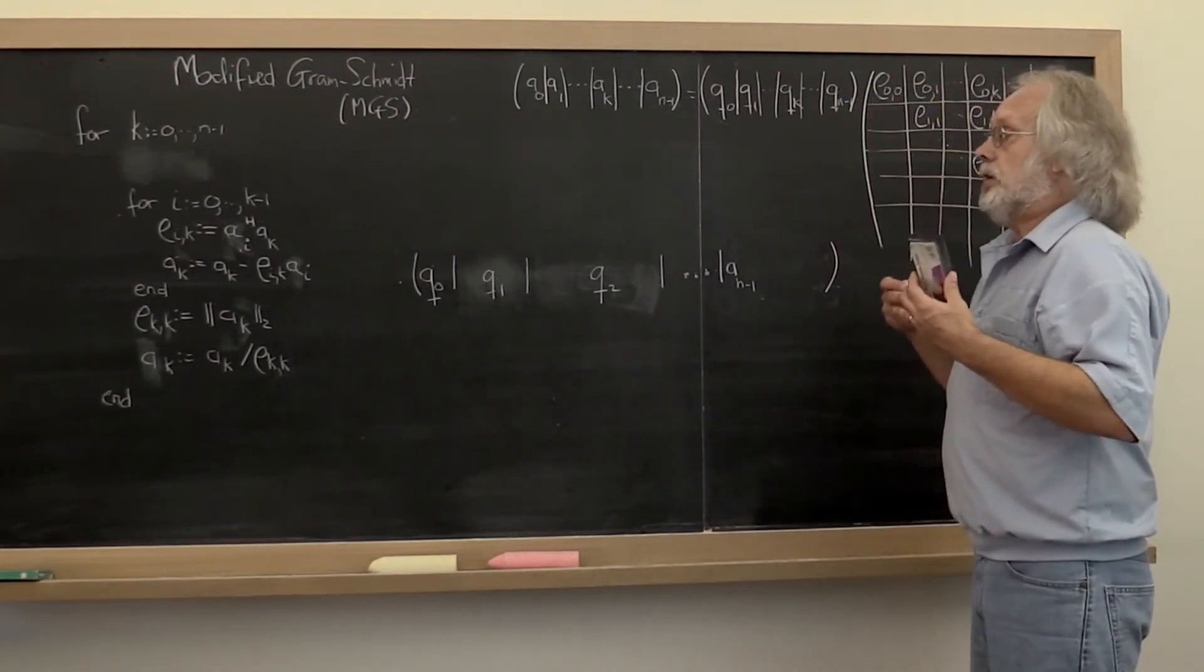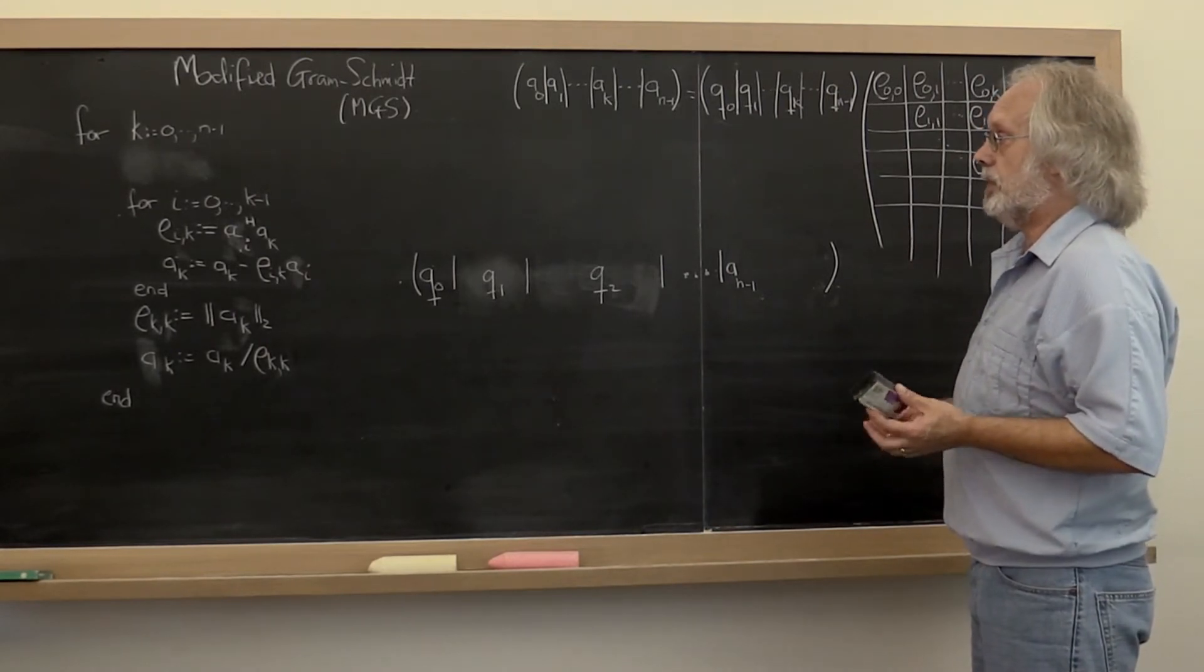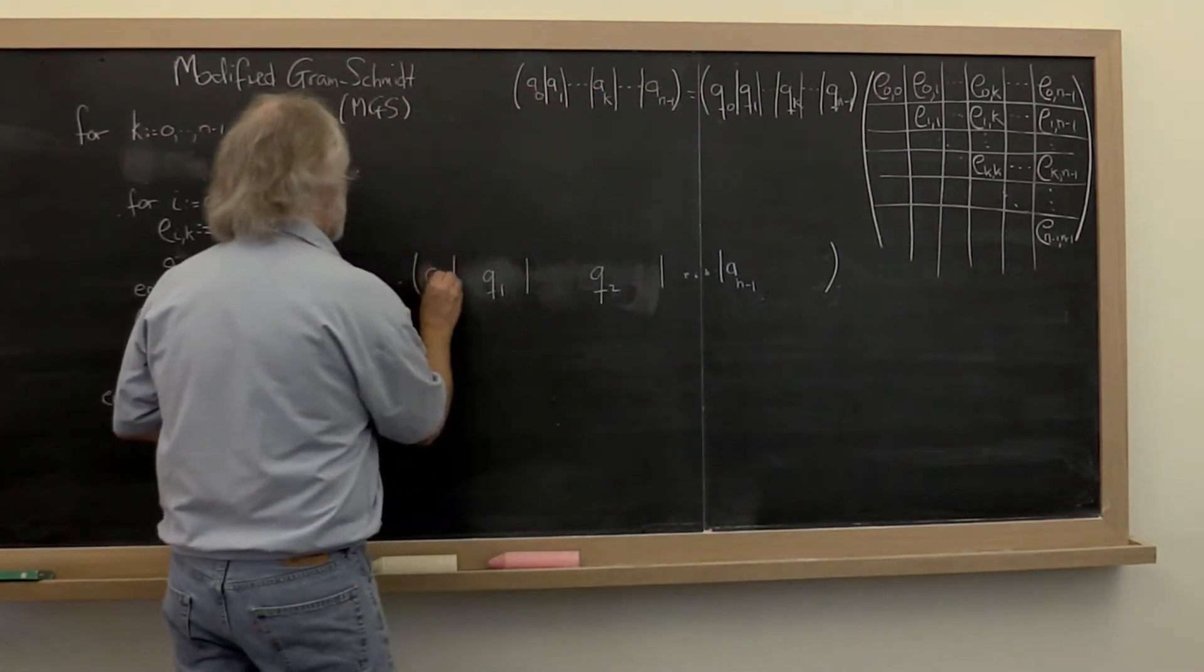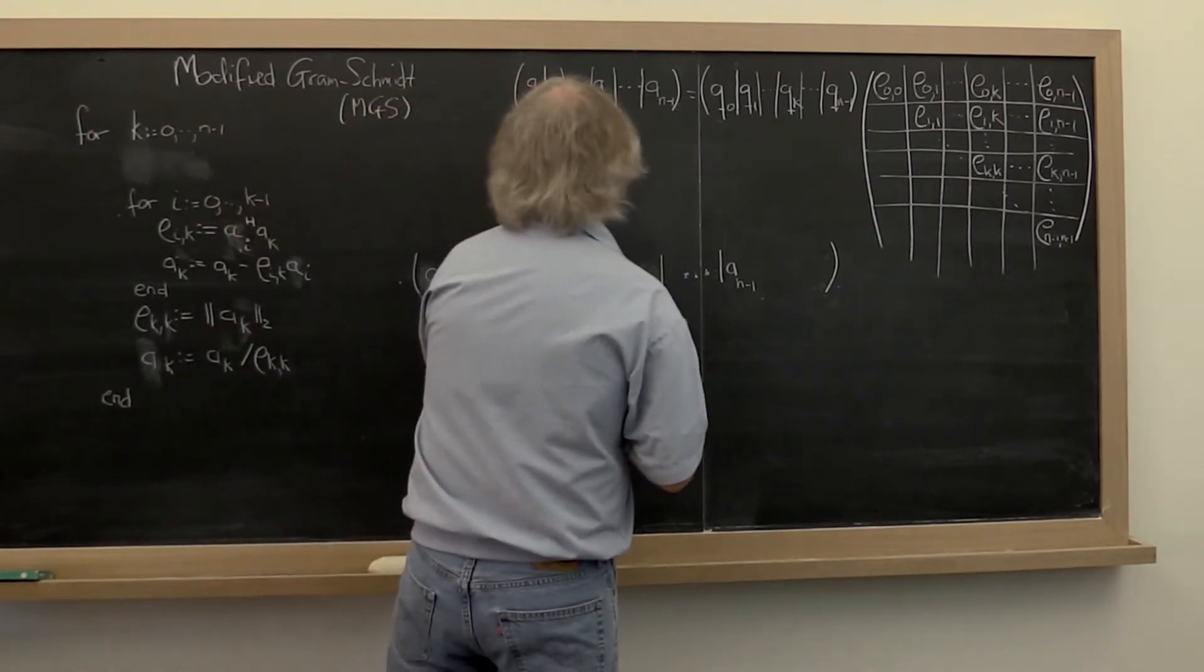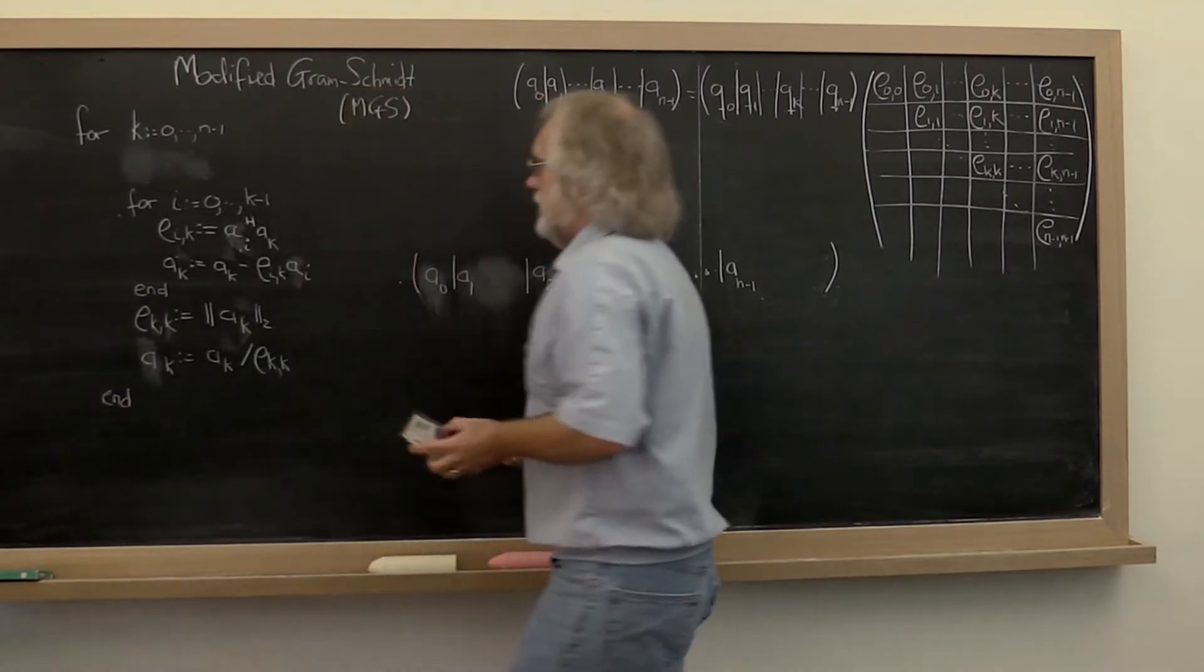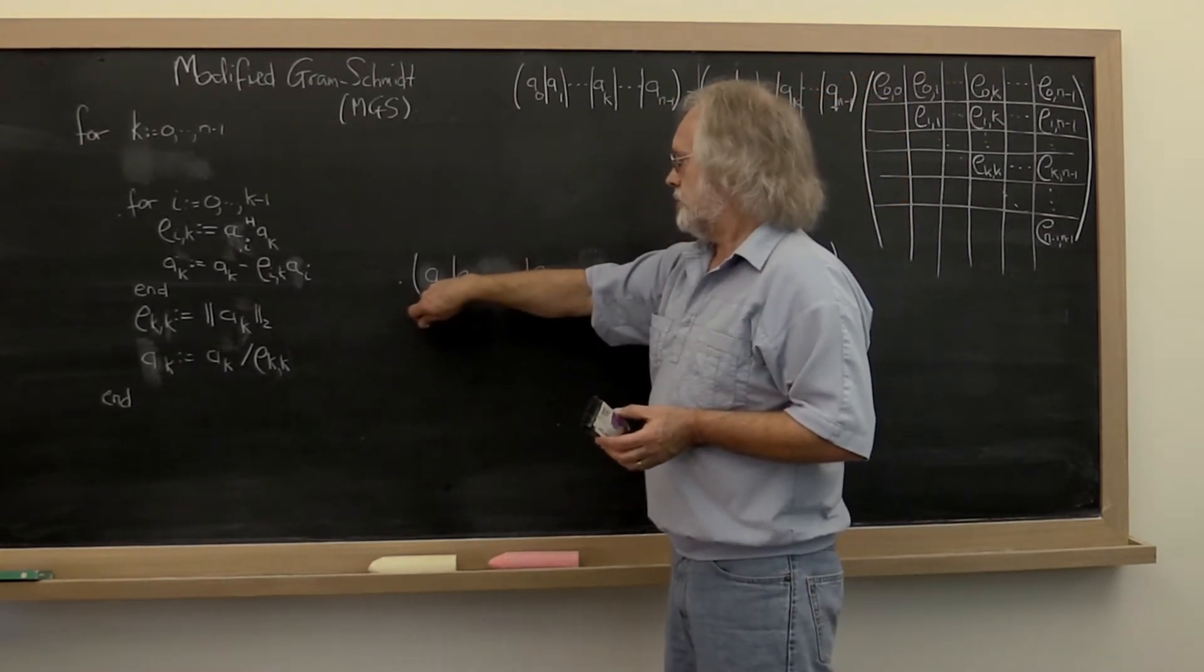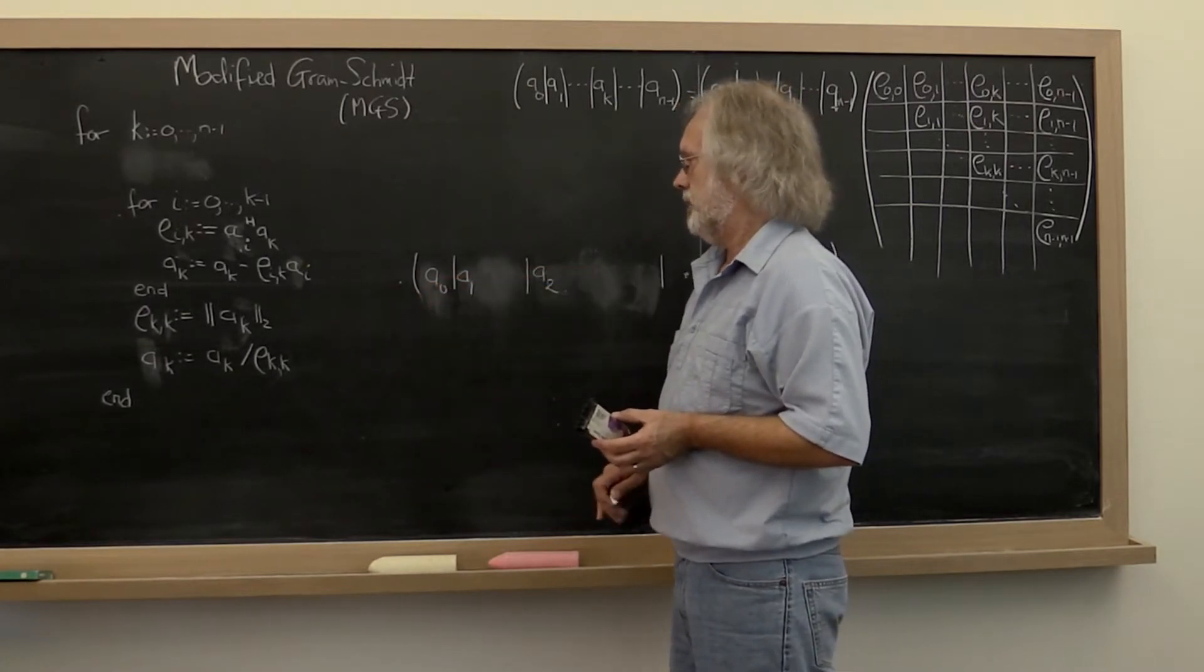Now there's a variation on this that we're going to describe now. Let's go back to the beginning here. You have A sitting here, and in the first iteration we compute row zero zero, the length of A zero, and then we divide by it, computing Q, and then we move on.